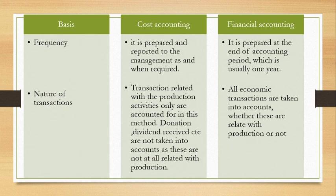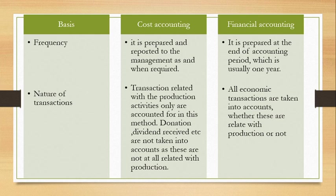On the basis of nature of transactions: in cost accounting, financial items like dividend, donation, and interest are not included. Only production-related costs are included. In financial accounting, all economic transactions are taken into account whether they are related to production or not. So the area of financial accounting is wider than cost accounting — it includes both production and financial items.